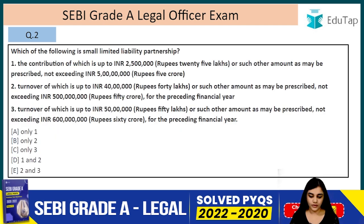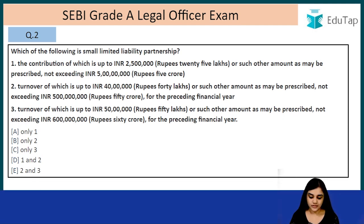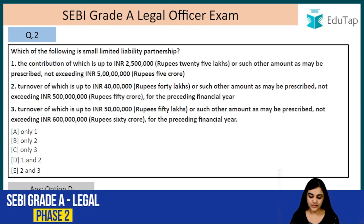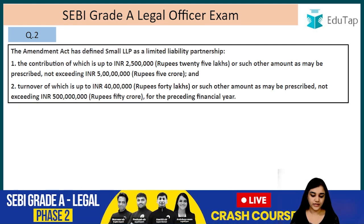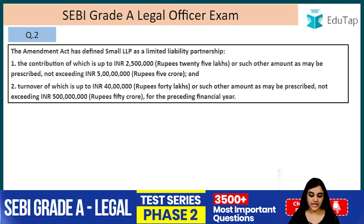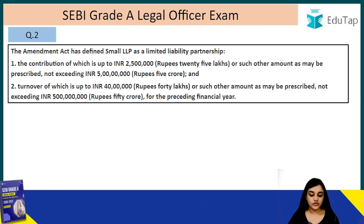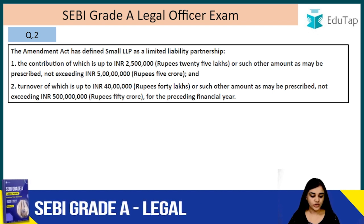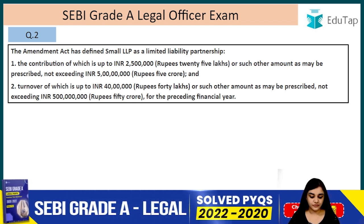Question number two: which of the following is a small limited liability partnership? The answer is D — both one and two are correct. The amendment act has defined small LLP as a limited liability partnership the contribution of which is up to 25 lakhs or such other amount not exceeding 5 crore rupees, and the turnover of which is 40 lakhs or such other amount not exceeding 50 crore rupees for the preceding financial year.